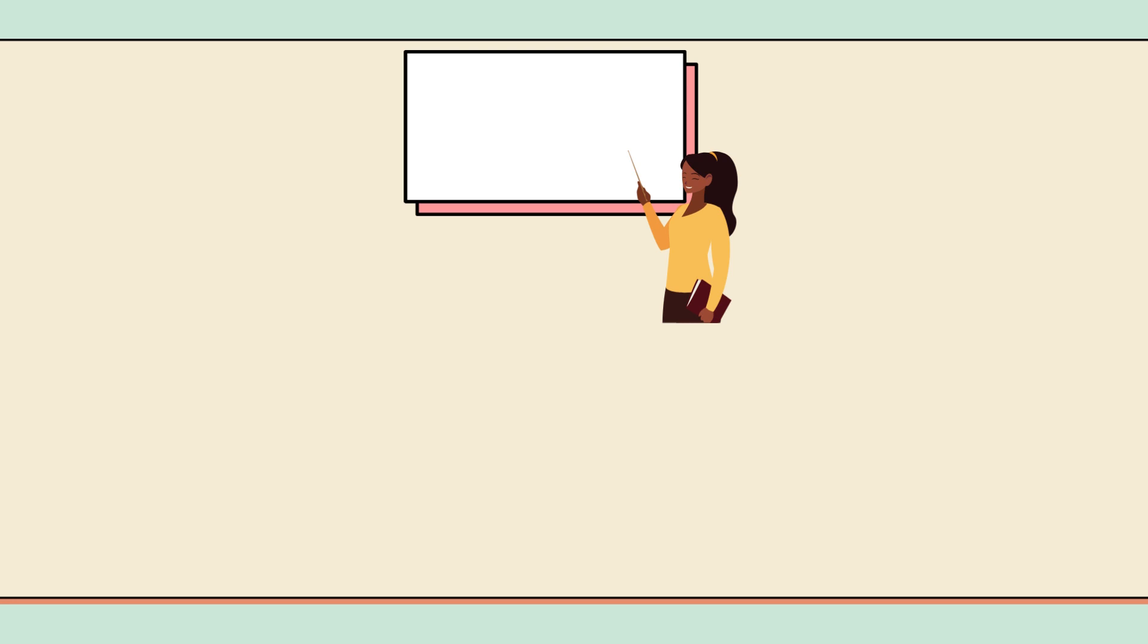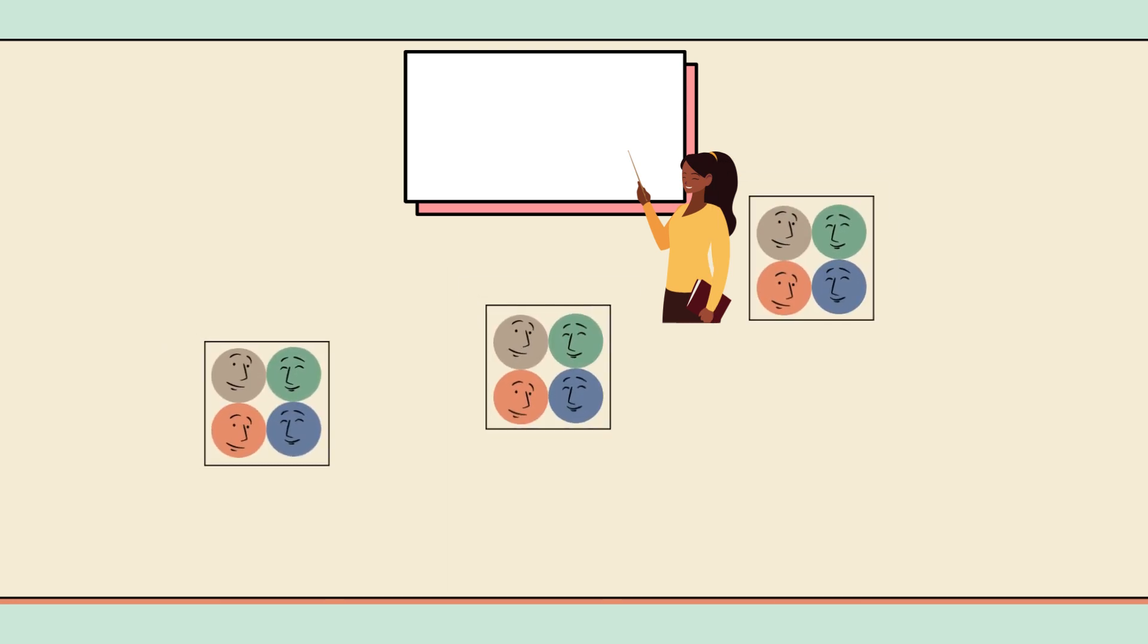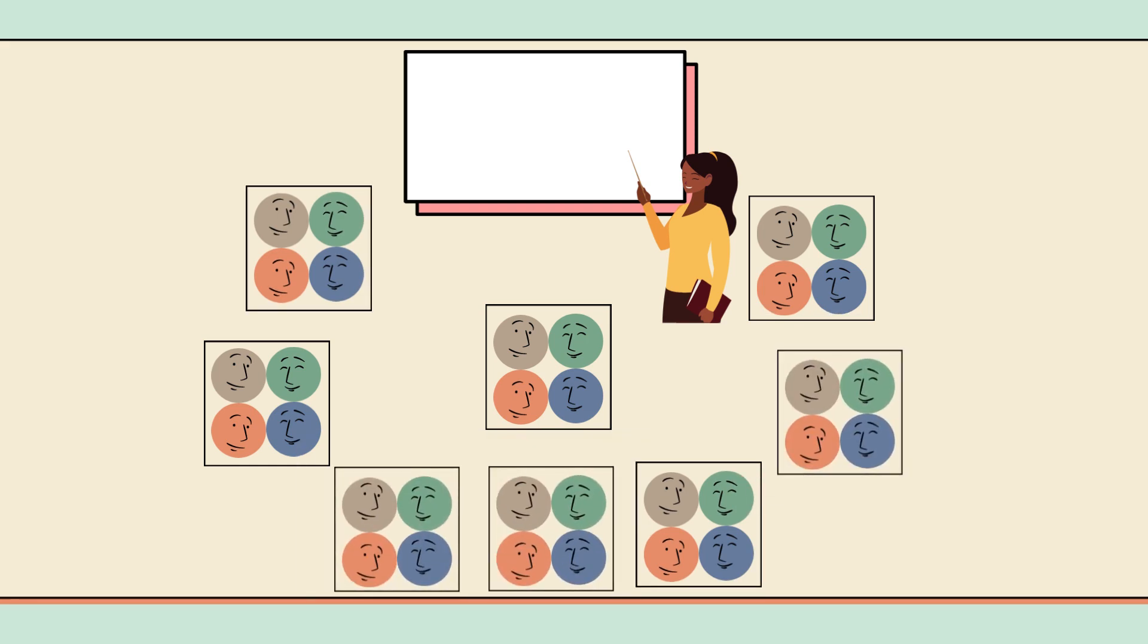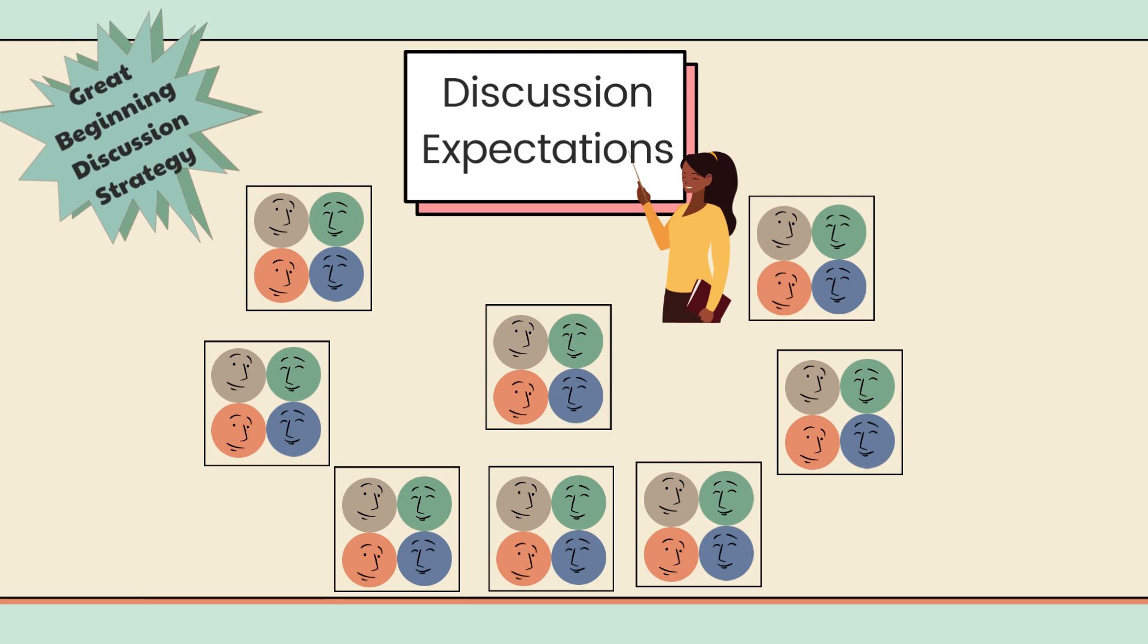The teacher then arranges the room to allow students to stand in groups of four. The strategy works best when you have established group discussion norms and expectations. Because of the individual accountability and immediacy of feedback, this is a good beginning discussion strategy.